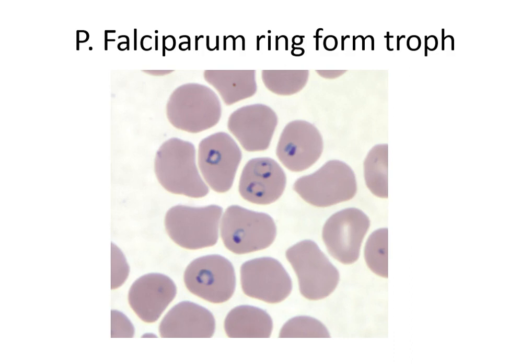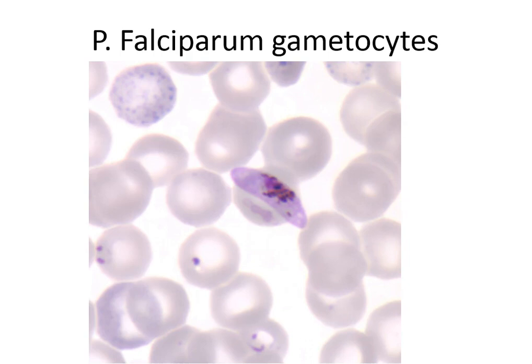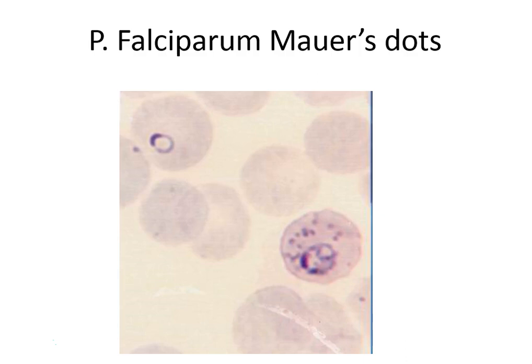P. falciparum has the highest parasitemia — it's the most severe with the most organisms in the patient sample. It can have two chromatin dots that look like a headphone, and appliqué rings that appear to be trying to get out of the red cell. It has 8 to 36 merozoites. It has banana/sausage/crescent-shaped gametocytes and Maurer's dots, which are just protein. It can cause blackwater fever, where the patient has intravascular hemolysis and hemoglobin in the urine.